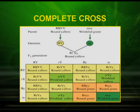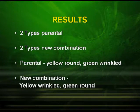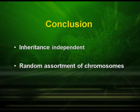Let us have a quick summary of the dihybrid cross. The parents represented by capital R, capital R, capital Y, capital Y for the round yellow dominant character, and small r, small r, small y, small y for the recessive character — wrinkled and green. The gametes after fusion produced the F1 generation which were all round yellow, capital R small r, capital Y small y. In the cross, two types of parental combinations and two new combinations were found. The parental types were yellow round and green wrinkled. The new combinations were yellow wrinkled and green round. He concluded that the inheritance is independent and there is random assortment of chromosomes.